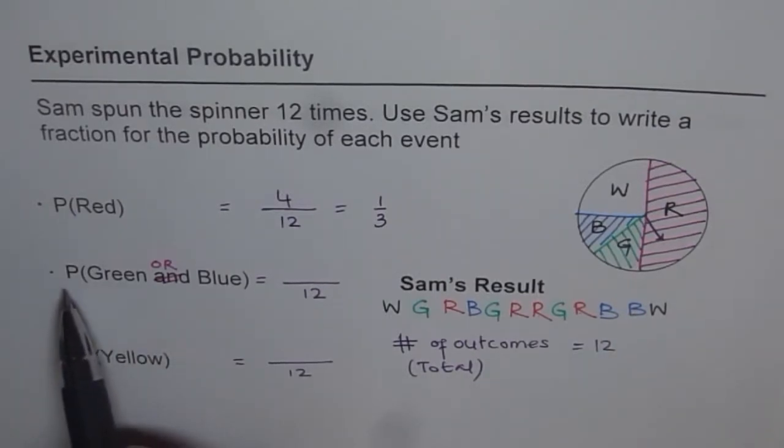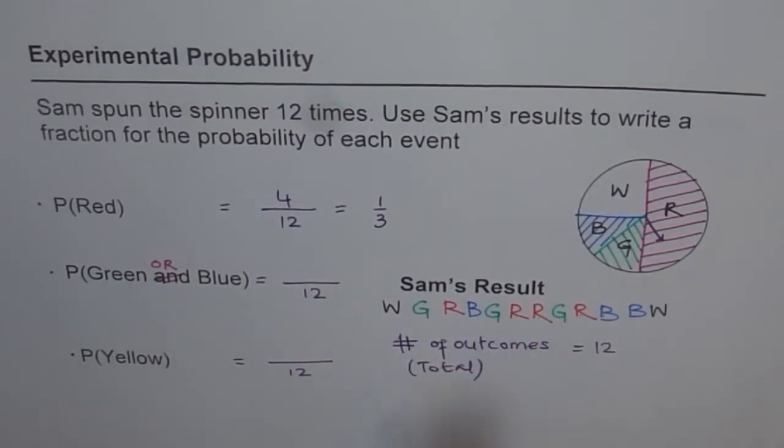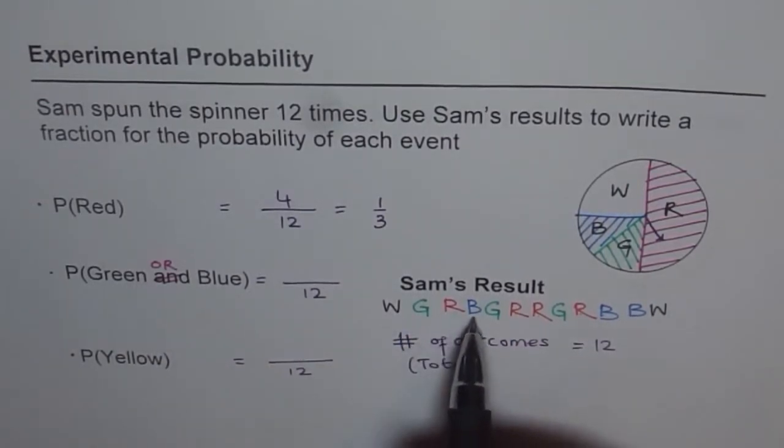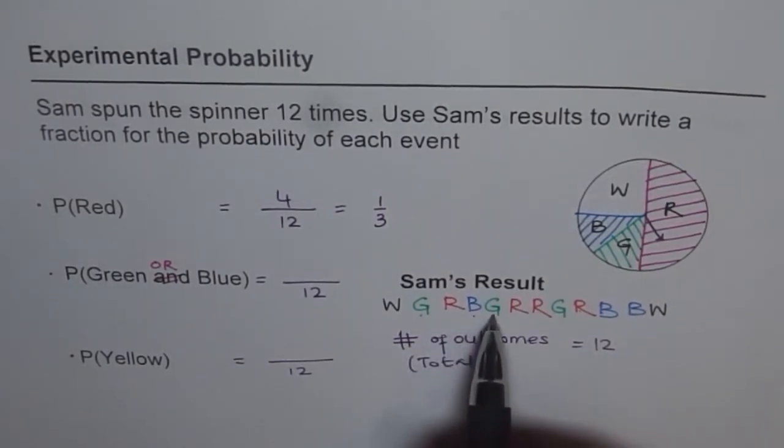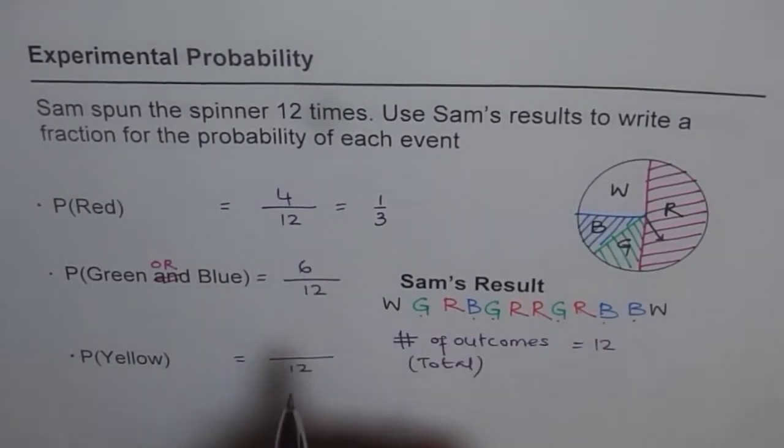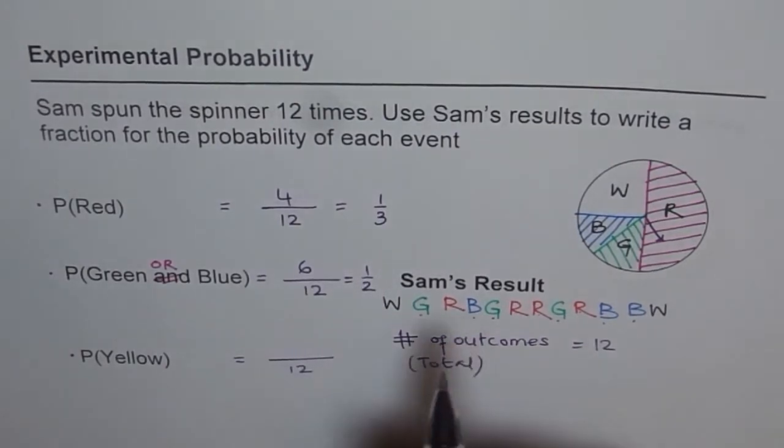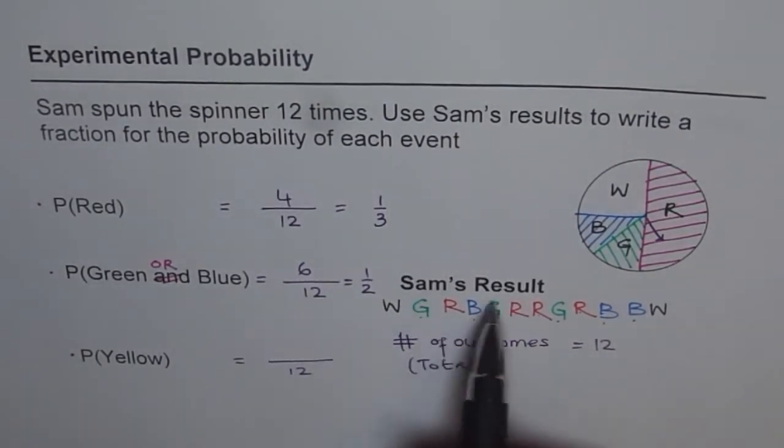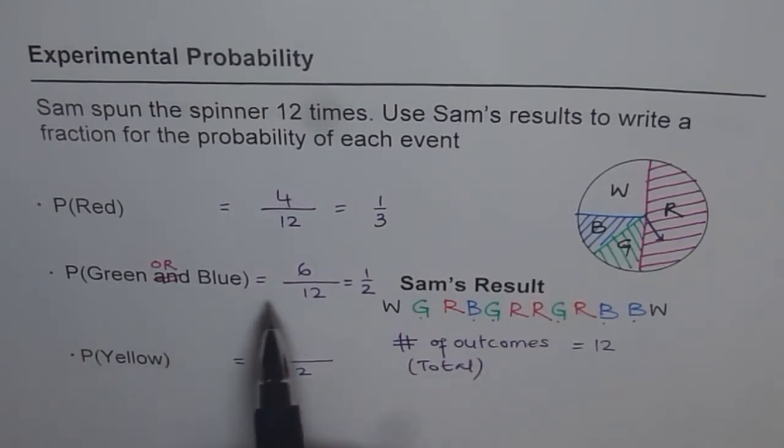Now the next one is probability of getting green or blue. That means count both green and blues. So this is green, this is blue, this is green. We will count them all. So 1, 2, 3, 4, 5, 6. It is 6 in all. So 6 over 12, which could be written as half. So the probability from Sam's results for green or blue is half.